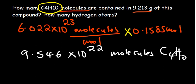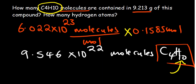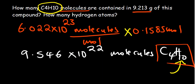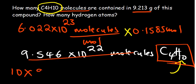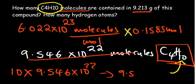The second part asks how many hydrogen atoms are present. We have 9.546 × 10²² molecules of C₄H₁₀. In each molecule of C₄H₁₀ — which is butane — there are 10 hydrogen atoms. So we multiply the number of molecules by 10, giving 9.546 × 10²³ hydrogen atoms.